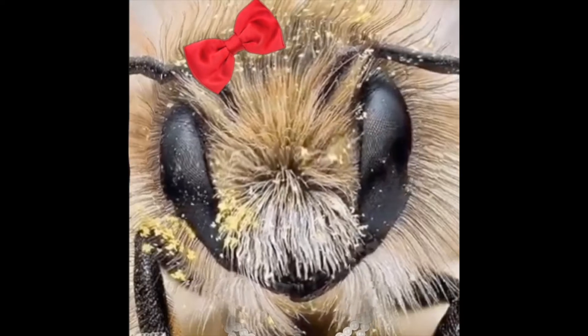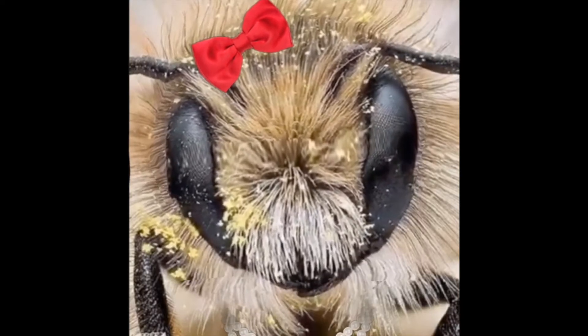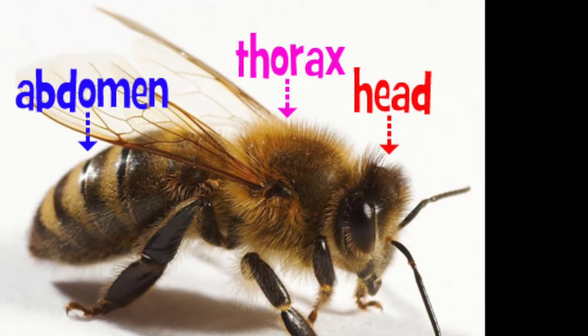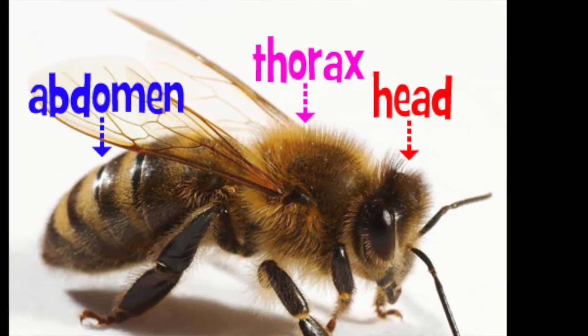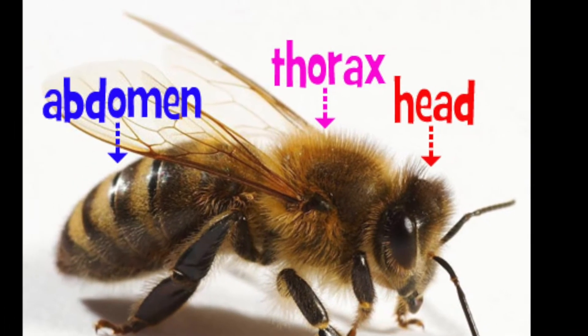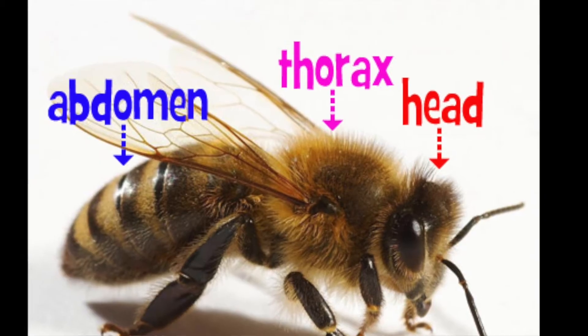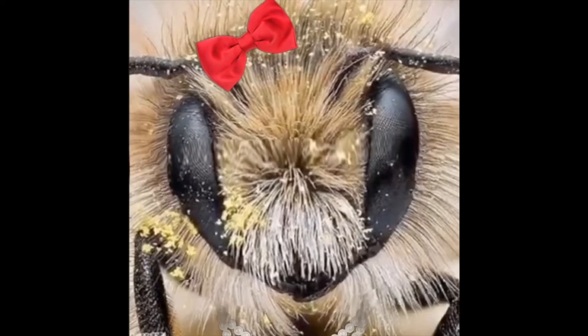Just like other insects, we have three sections. We have a head, we have a thorax, and we have an abdomen. Pretty cool, huh?